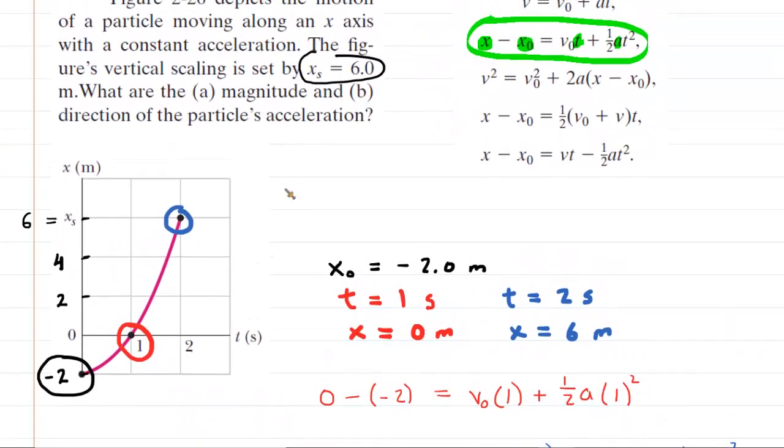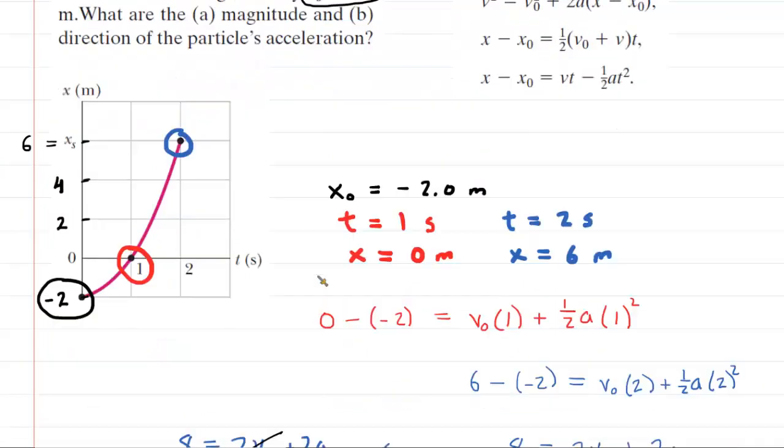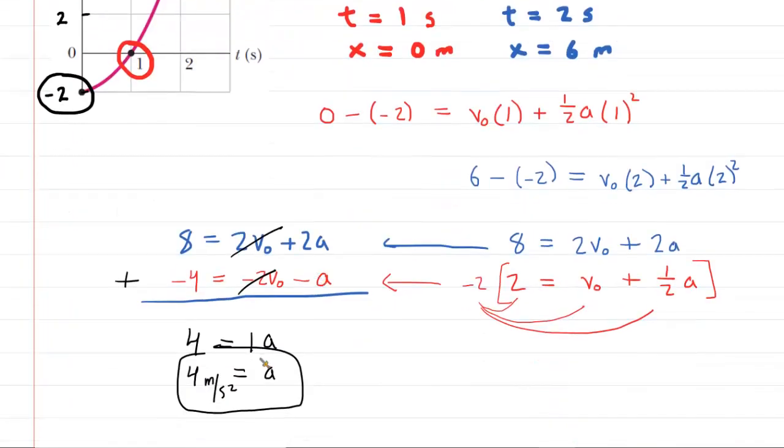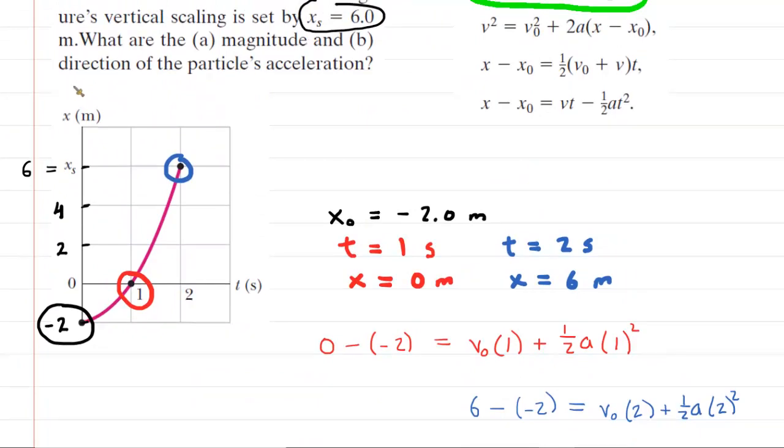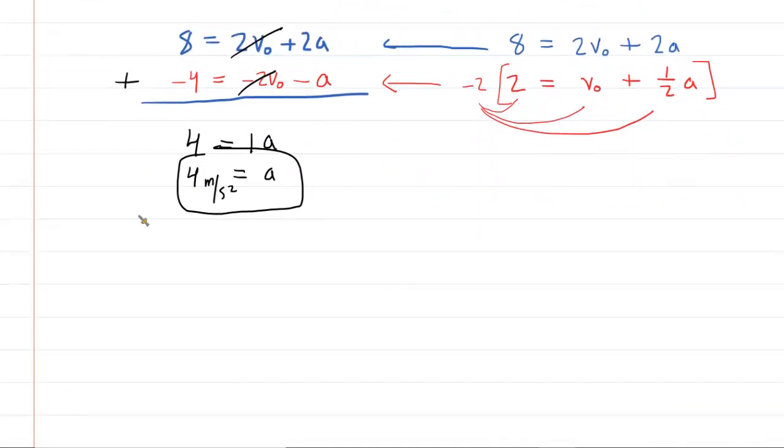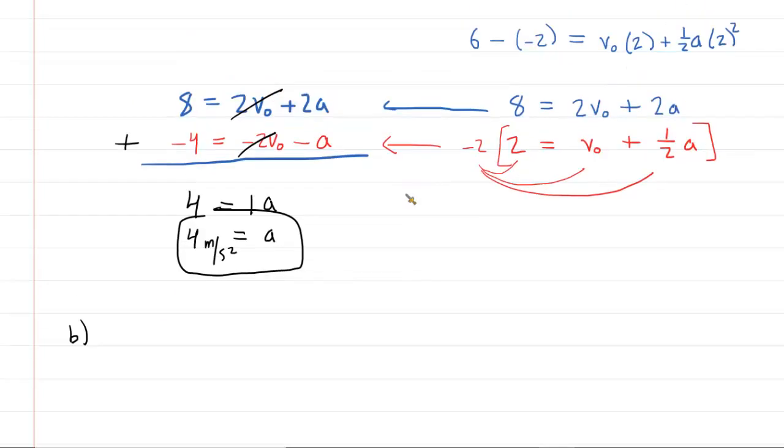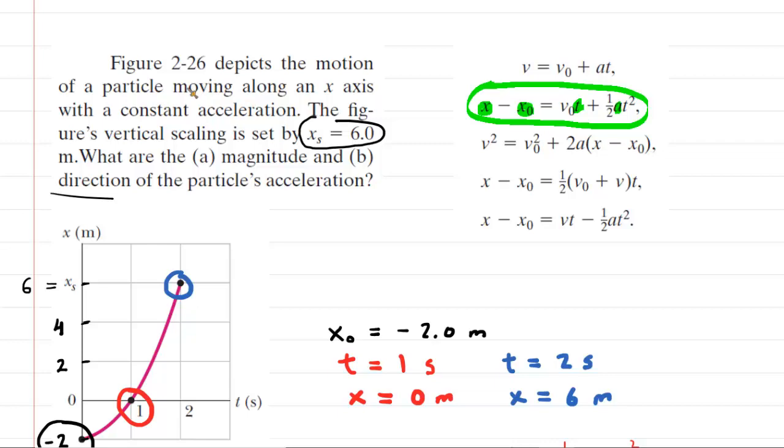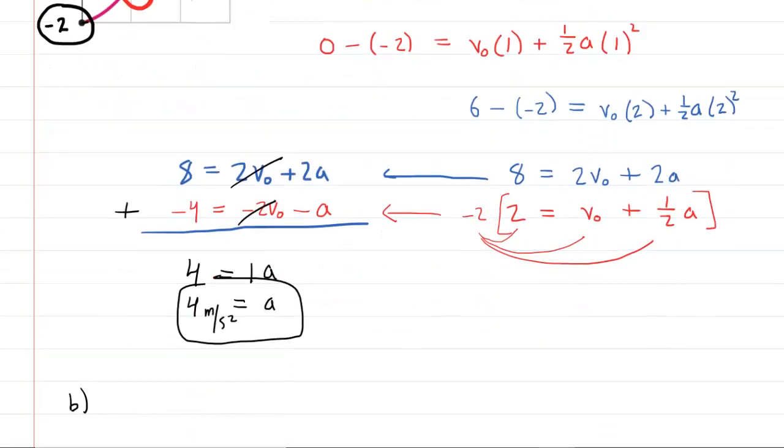Let's just make sure that we've actually answered it. It wanted the magnitude only for part a. So yes, the magnitude is 4 meters per second squared. It wants the direction in part b. Well, we calculated a positive value for this acceleration. So just ask yourself in which direction would that be. And that would be in the positive direction. Let's see if it's the positive x direction. Yeah, it says it's moving along an x axis. So really, the answer for part b would be in the positive x direction, or you could say along the positive x axis. That would be the same. So there's the answer to part b.